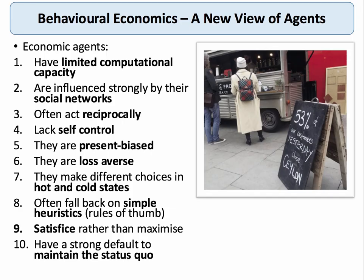This new view of agents takes us away from the idea that agents are perfectly optimizing, maximizing, and cold calculating machines looking to maximize their welfare from every single decision. Instead, behavioral economics invites us to think about people who have a limited clock speed and limited computational capacity. They're strongly influenced by their own social networks — be they family, community, or kinship groups. Often they act reciprocally as well as in self-interest, and they make decisions lacking self-control; in particular, they tend to be present biased.